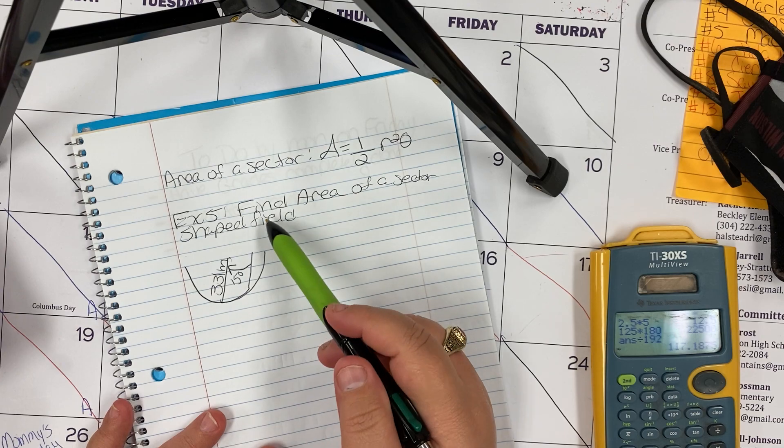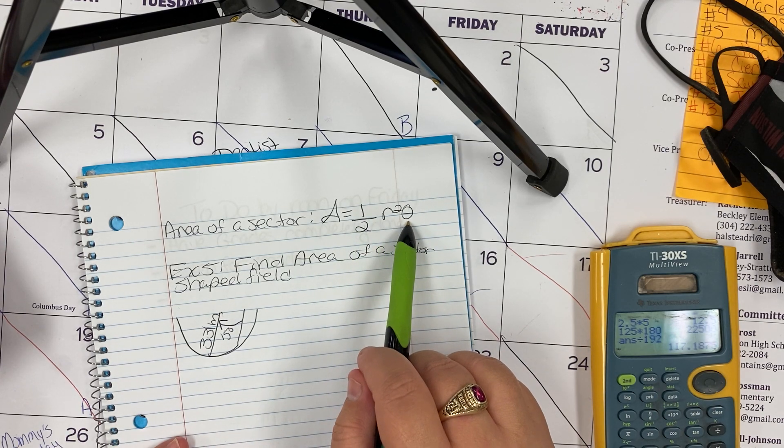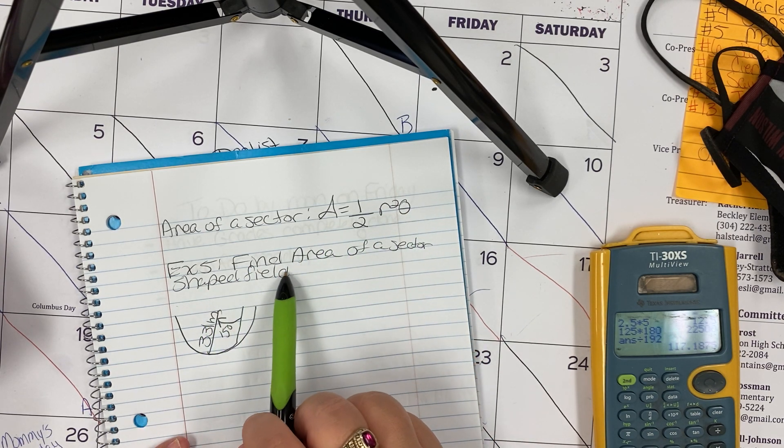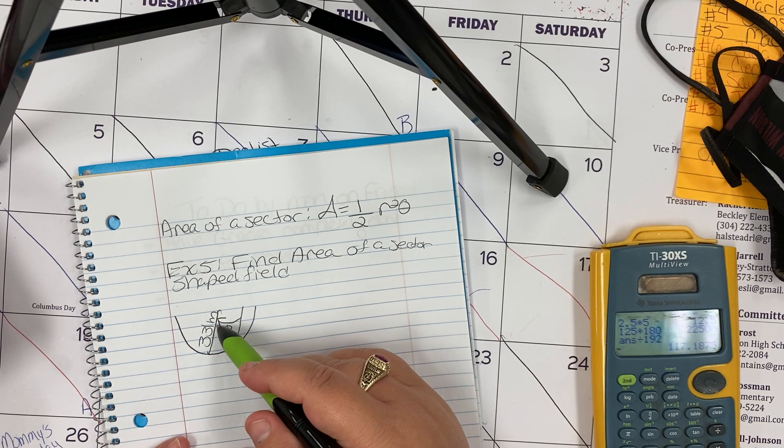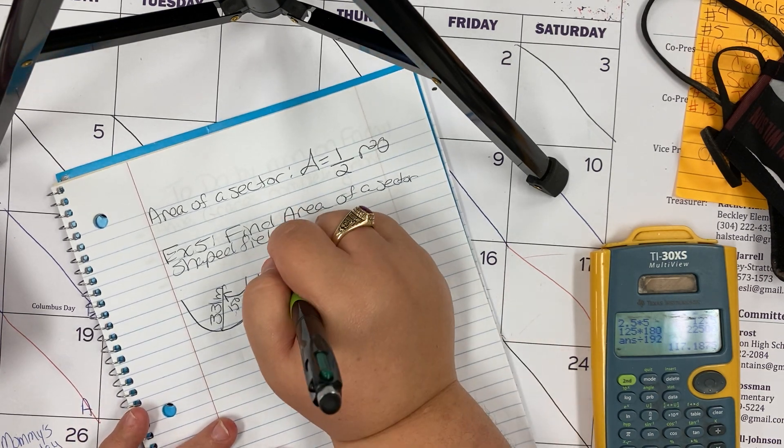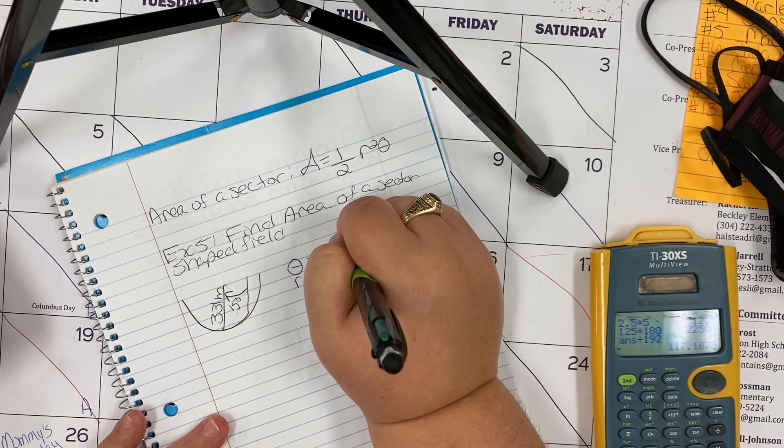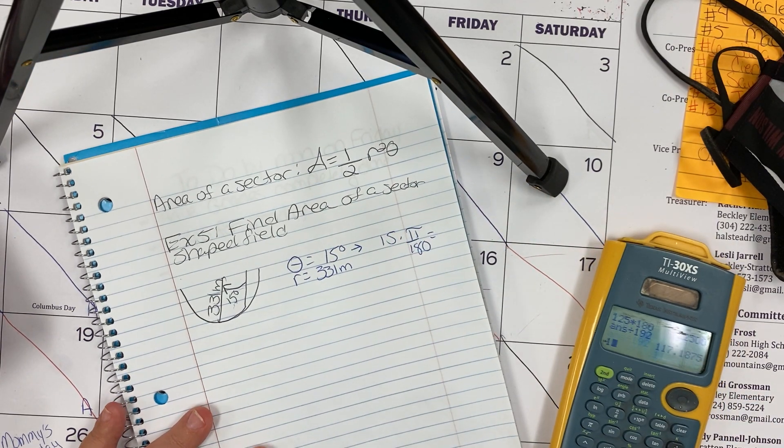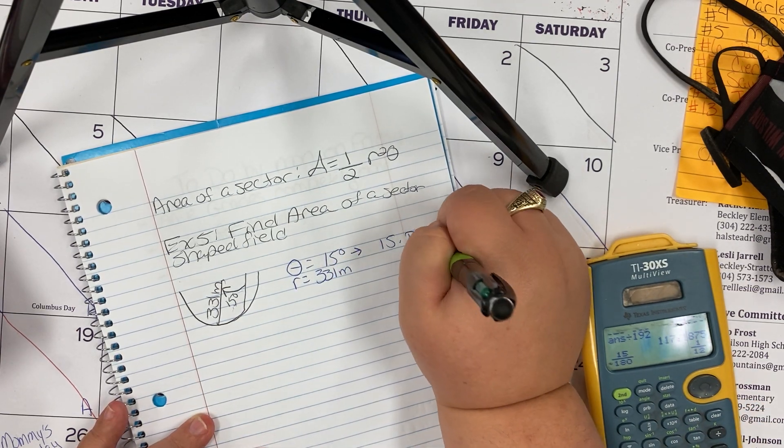Last thing in this section is area of a sector. The formula for that: fancy A equals 1/2 r squared theta, and theta again is in radians. We need to find the area of a sector shaped field. The sector shaped field has an angle of 15 degrees and a radius of 321 meters. So theta equals 15 degrees, r equals 331 meters. We need to convert 15 degrees to radians, which is π over 12.